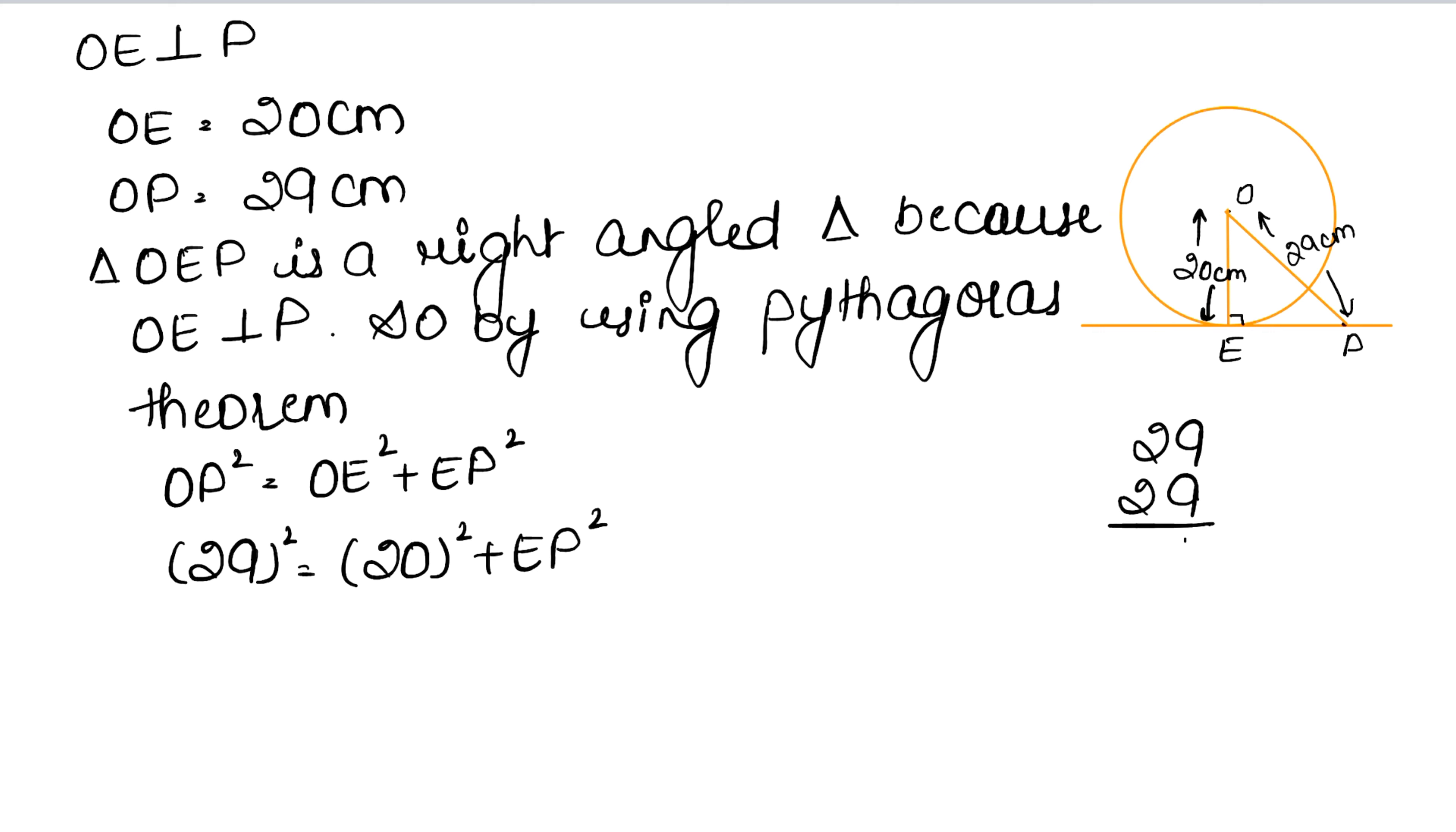29 into 29: 9 times 9 is 81, 9 times 2 is 18, so 19, 20, 21, 22, 23, 24, 25, 26 into 2, 9 is 18 carry 1, 2 times 2 is 4 and 5. So this is 1, 14 carry 1, 8. 841 equals 400 plus EP square.